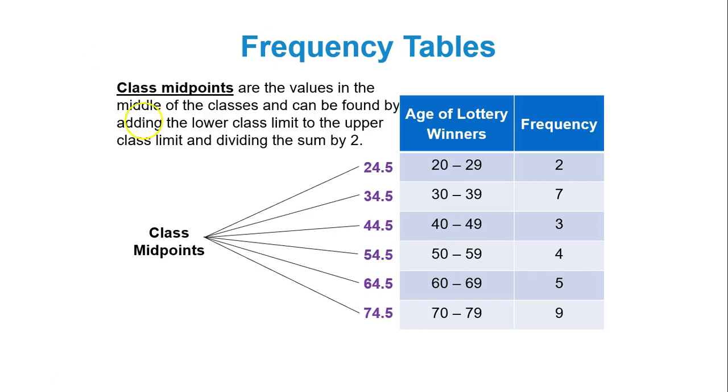The class midpoints are found by taking the lower class limit plus the upper class limit and divide by two. You're averaging the limits of your class or bin. So 20 plus 29 over two, that's where the 24.5 came from. The 34.5 came from 30 plus 39 divided by two and so forth. Those are class midpoints.